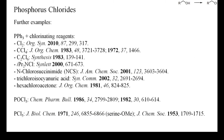Here are some more references to illustrate the scope of these reagents. Phosphorus trichloride is also well suited to convert amides or ureas into chloroiminium chlorides, which are also useful deoxychlorinating reagents. But this is the subject of the next video of this playlist. See you then!